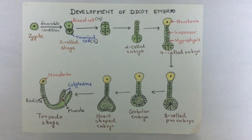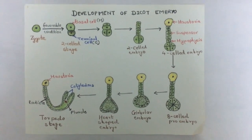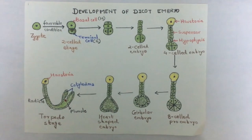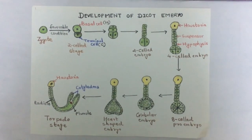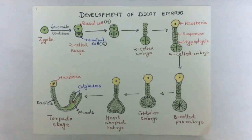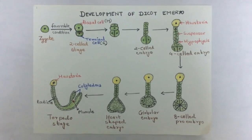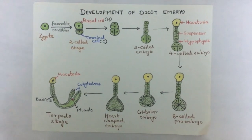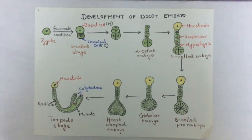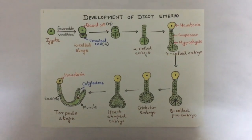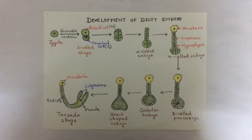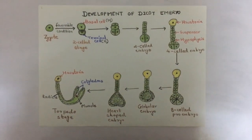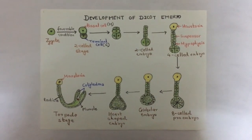Today we discuss the development of the dicot embryo. An embryo is a zygote that undergoes several developmental changes. Here we can see how the zygote undergoes several divisions, forming various stages that finally result in the dicot embryo.